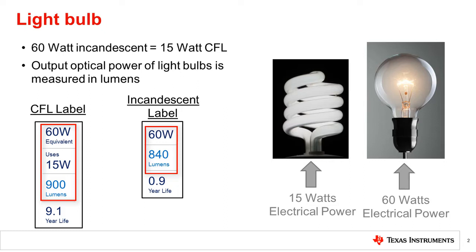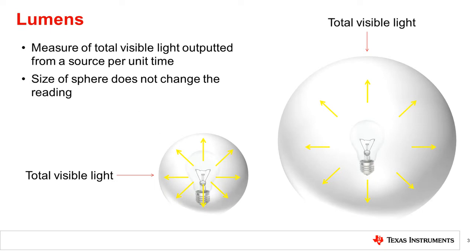Optical output power, as seen by the human eye, is measured in lumens, which is now displayed on most light bulb packaging as a way to accurately compare the brightness of different bulbs. The 60 watt incandescent and 15 watt compact fluorescent bulbs both output between 800 and 900 lumens. The lumen is a measure of the total visible light emitted by a light source. To measure lumens, one could place the light bulb in a sphere and measure the brightness of light emitted by the bulb from all directions, as shown. Changing the size of the sphere does not affect the measurement because all light is captured regardless of sphere size. Lumens measures the light seen by the human eye and only measures the visible region, allowing the total visible light output of different light sources to be compared.